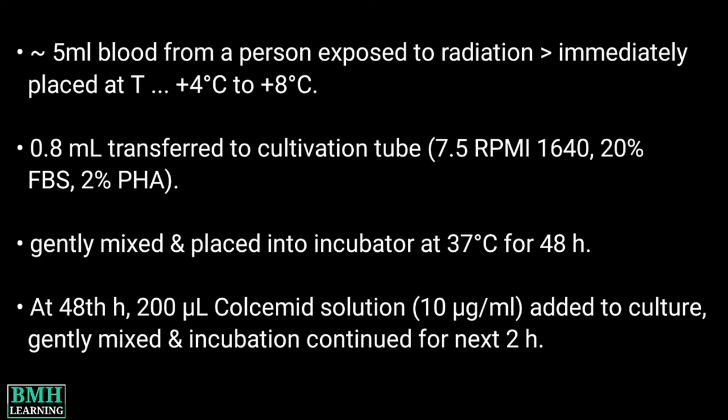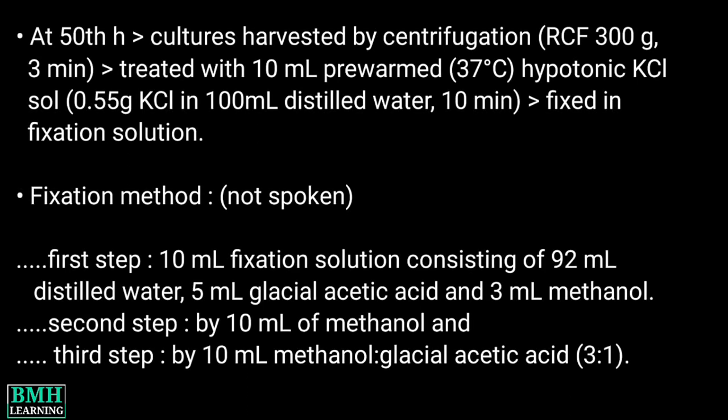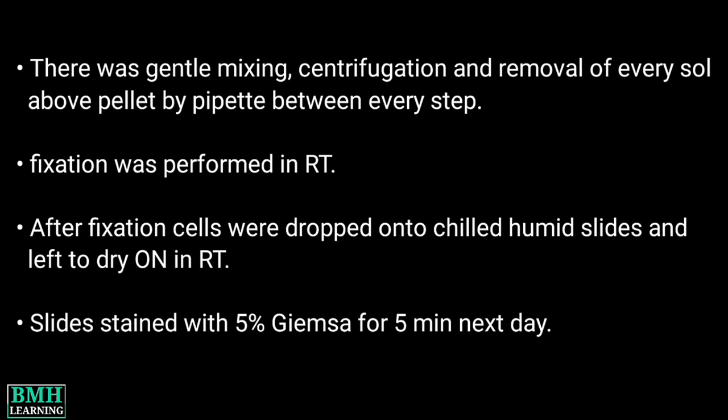Cells will be arrested when they reach the metaphase stage by colcemid. This is done because metaphase chromosomes are seen clearly under the microscope, as at this stage chromosomes are in a highly condensed state. At the 50th hour, the cultures are harvested by centrifugation and treated with 10 ml of pre-warmed hypotonic KCl solution, then fixed in fixation solution. There was gentle mixing using a pipette, centrifugation, and removal of every solution above the pellet by pipette between every step. Fixation was performed at room temperature. After fixation, the cells were dropped onto chilled humid slides and left to dry overnight at room temperature.